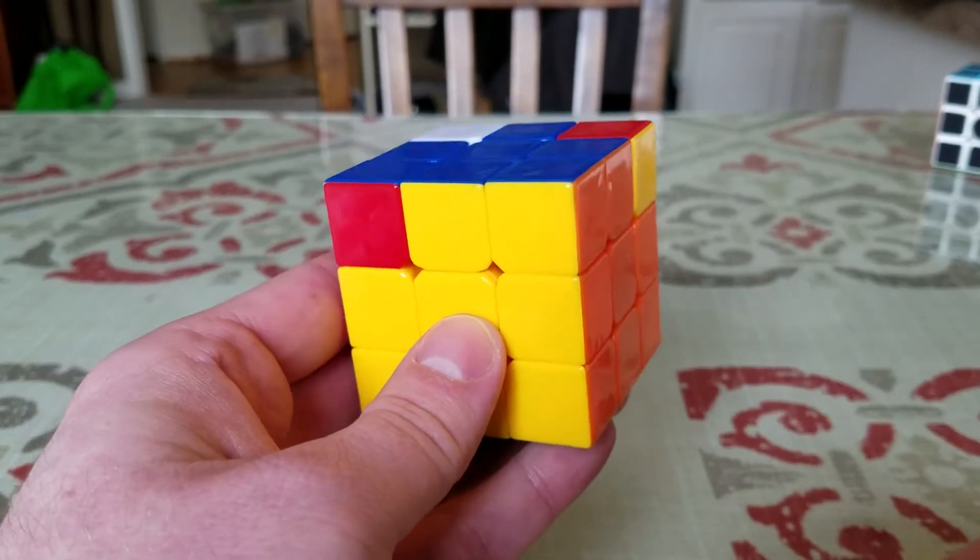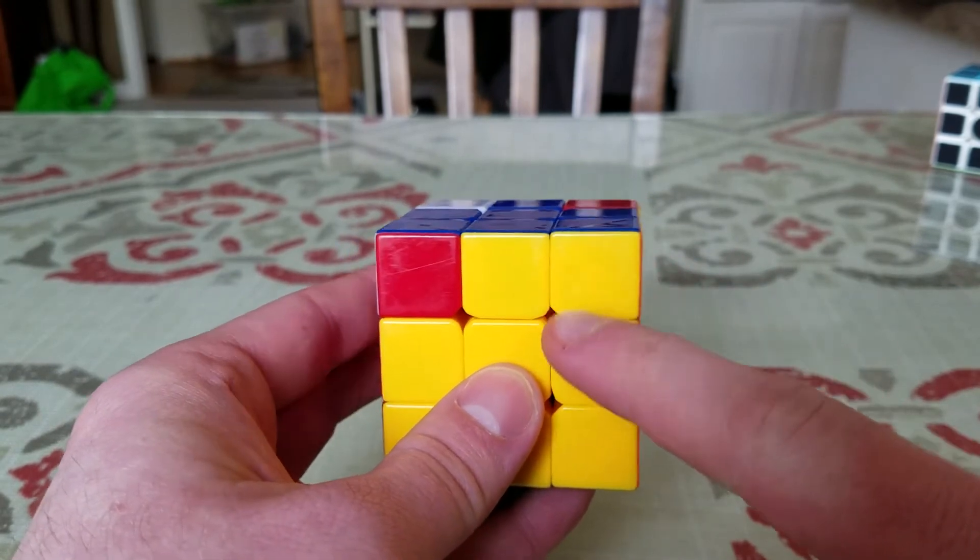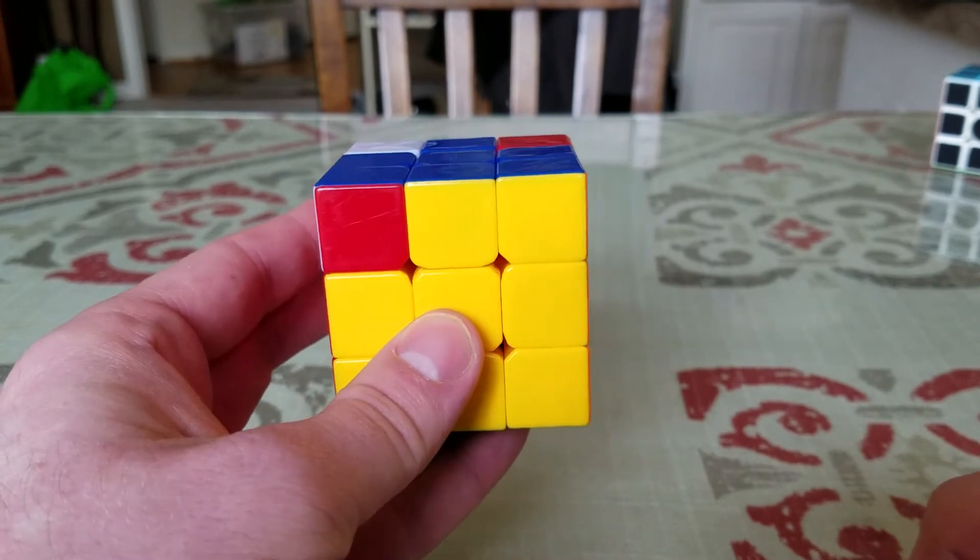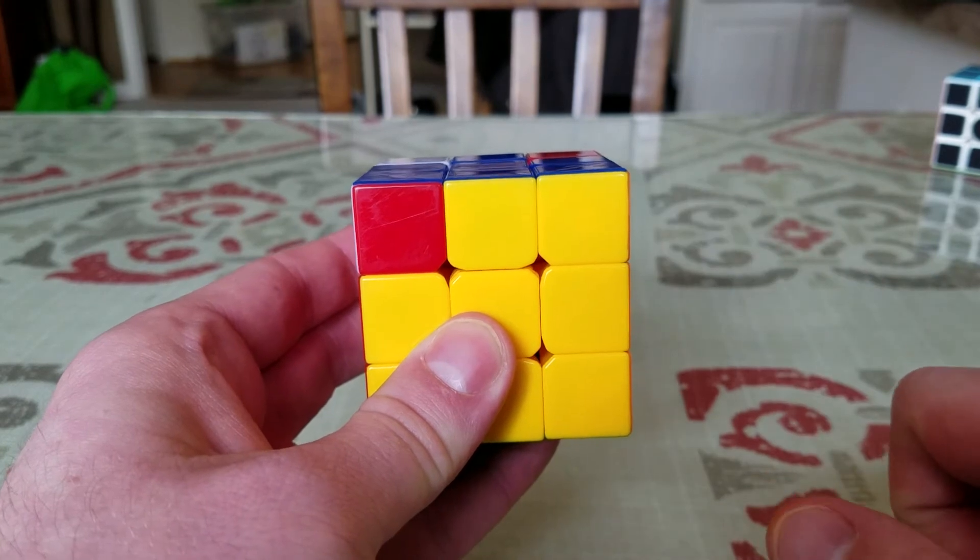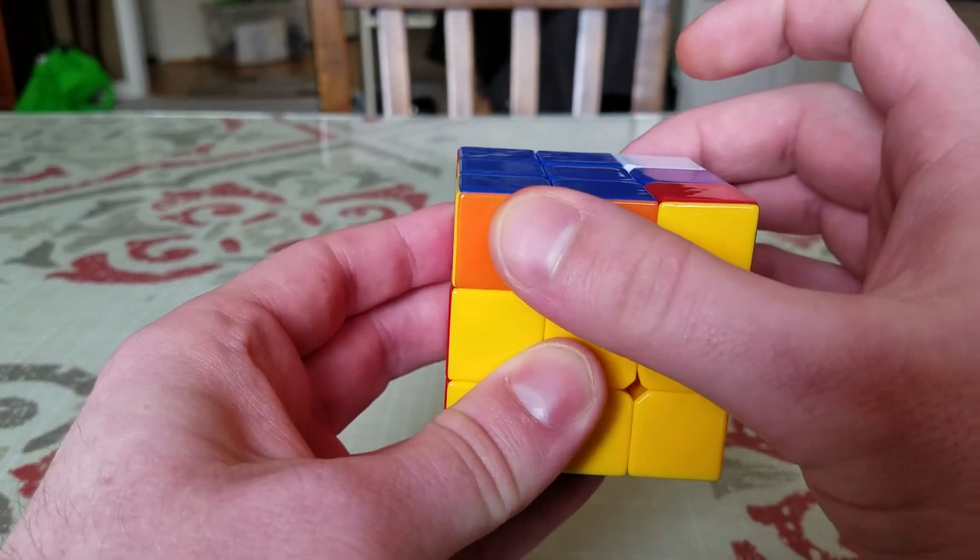This is the move. You're going to take the piece that is in the right position and you're going to put it in the top right corner of the front of the cube. Once you have that, so that's this piece right here. Once you have that, we're going to turn the top one just to get the move started.